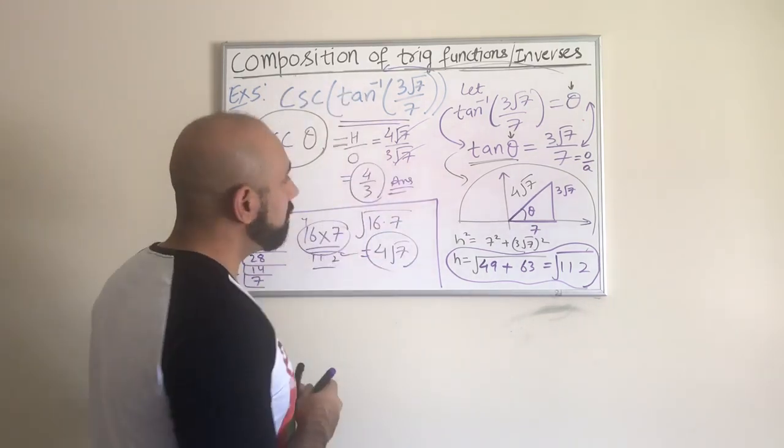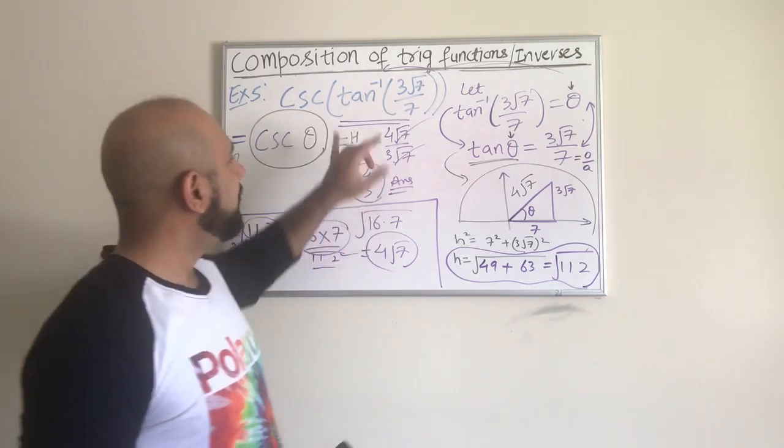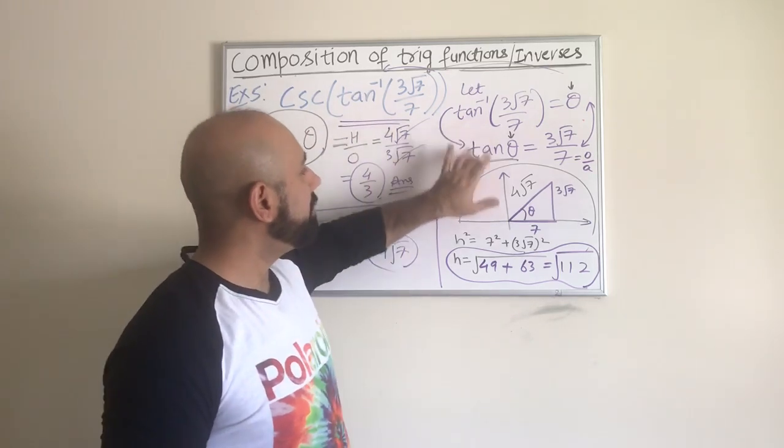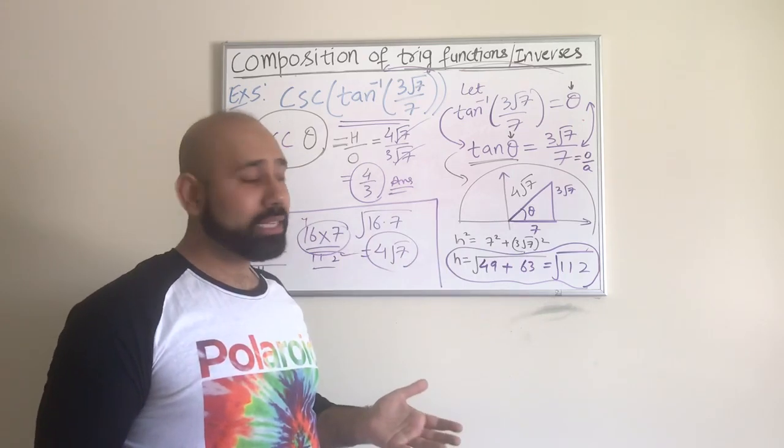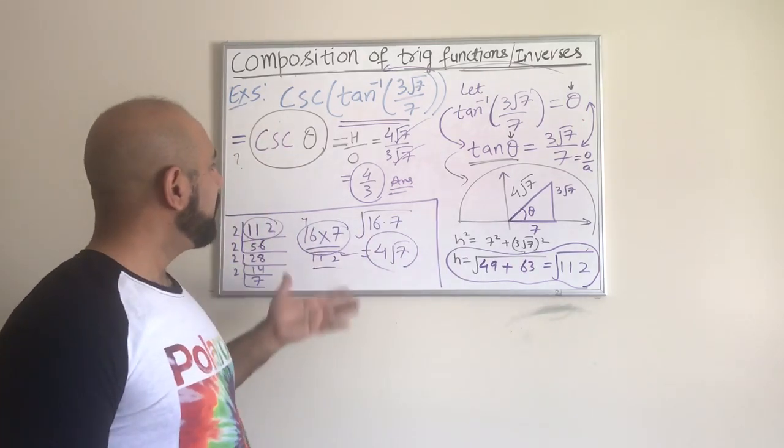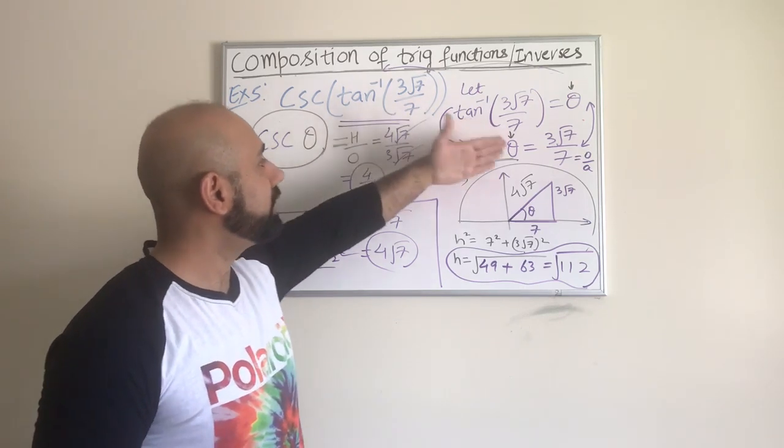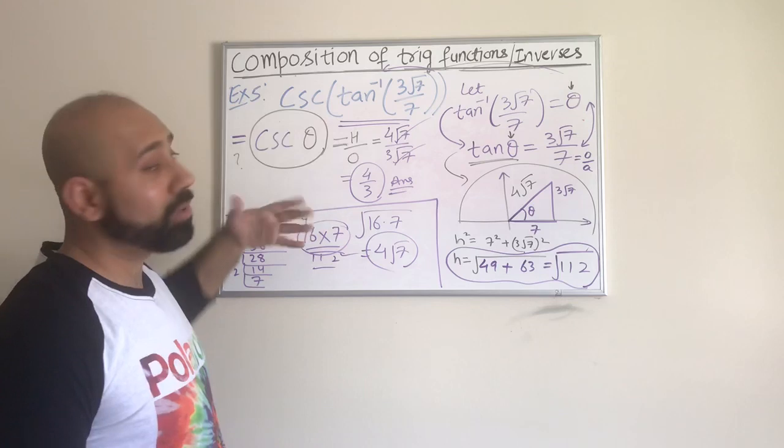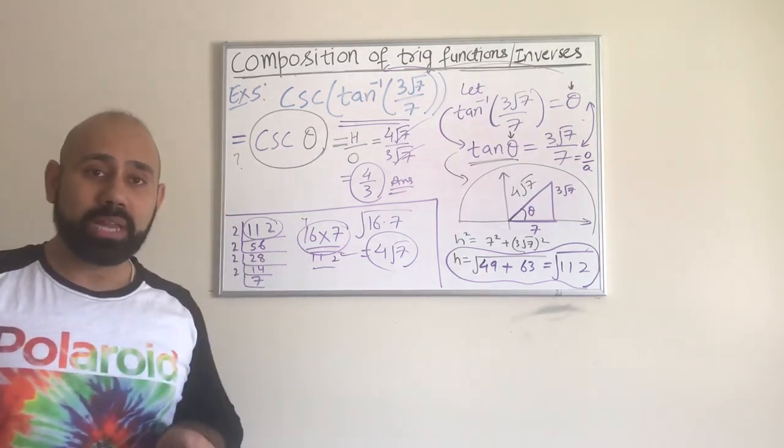This is the final answer for this composition of cosecant with the tan inverse. Again, we have to start by setting this equal to theta, understanding that this is the same as tan theta equals that ratio, setting it up, drawing the reference triangle, and then simplifying things and finding the cosecant.